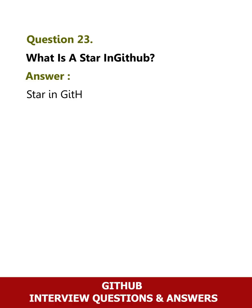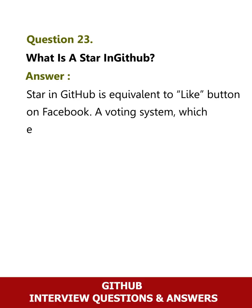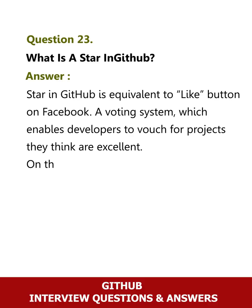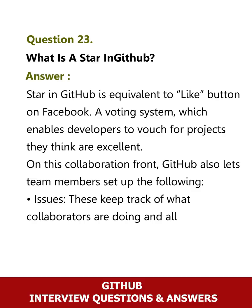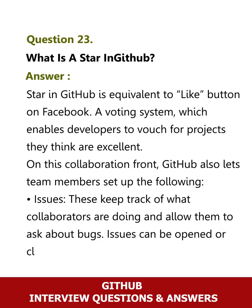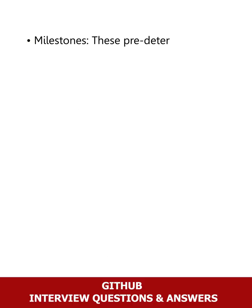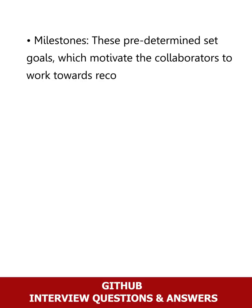Question 23: What is a star in GitHub? Answer: A star in GitHub is equivalent to the like button on Facebook — a voting system which enables developers to vouch for projects they think are excellent. GitHub also lets team members set up issues, which keep track of what collaborators are doing and allow them to ask about bugs. Issues can be opened or closed once they have been rectified. Milestones are pre-determined set goals which motivate collaborators to work towards recognition.